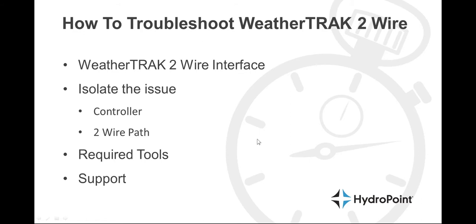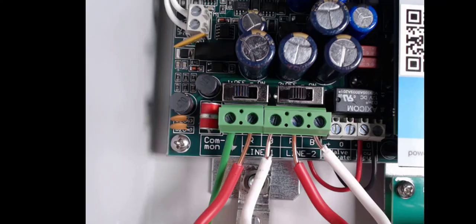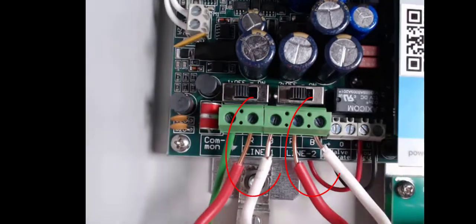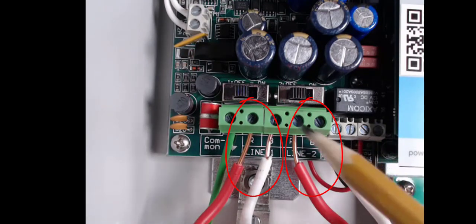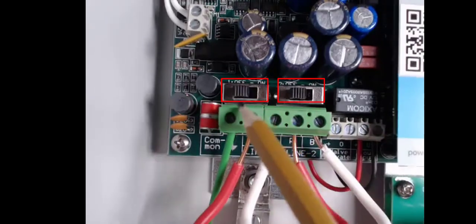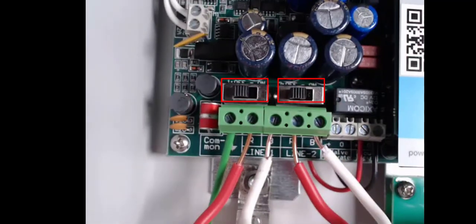Once we are using the information on the WeatherTrack 2-Wire interface to identify an issue, the first thing we need to do is isolate it. We can immediately eliminate the controller from suspicion with one easy test — we disconnect it from the 2-Wire path. With the WeatherTrack hardware, this is easy to do. In the lower left-hand corner of the 2-Wire interface, where the 2-Wire paths are plugged in, over each of those terminals there is a switch that lets us easily turn off the 2-Wire path plugged into those terminals. So we can quickly isolate the controller from the 2-Wire path by turning these switches off.